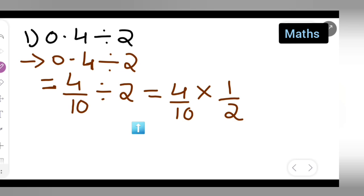So what you can do is cancel. 2 into 4 is 2. So basically your answer is nothing but 2 upon 10, which means you have to write this in decimal form. So your answer will be 0.2.